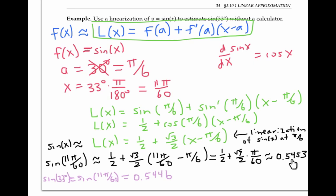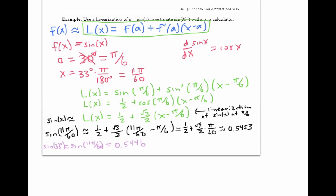Using a calculator to find sine of 11 pi over 60 directly — the same as sine of 33 degrees — gives 0.5446 approximately. So our approximation using the linearization is very close to the calculator's more accurate value. Notice that the approximate value based on the linearization is slightly higher than the actual value, and you can see why from the graph: the tangent line at pi over six lies slightly above the graph of sine x, so the linearization gives a slightly bigger value than the actual sine of 33 degrees.